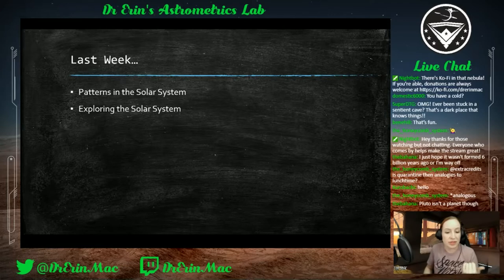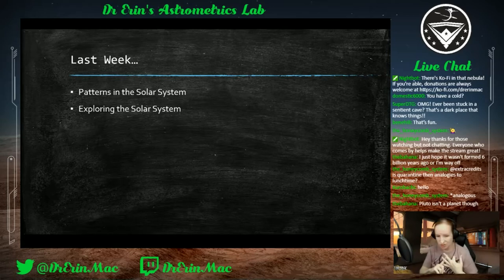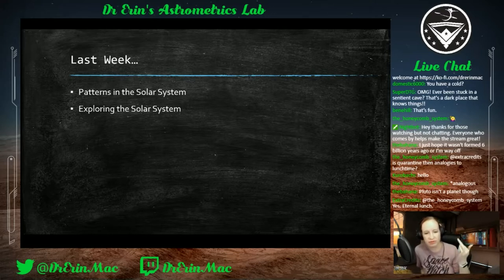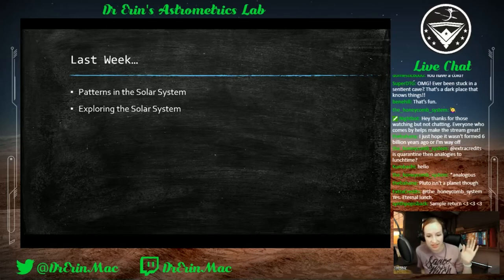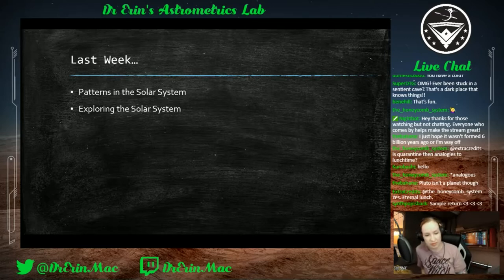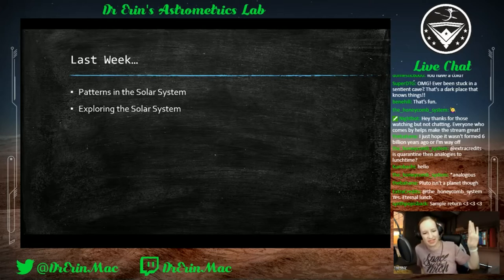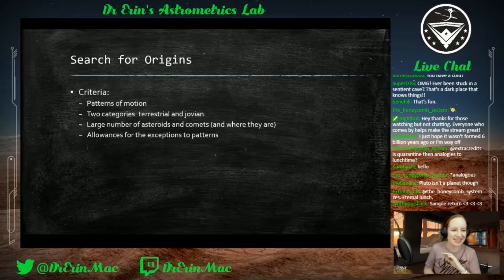We talked about different ways to explore our solar system: flyby missions, orbital missions, landers, rovers, and sample return missions. If you didn't catch it last time, the VODs are available — my toggle was set to subscribers only which I didn't intend, so I apologize. You can also find recordings on my YouTube link below. We had adorable videos and lots of emotions last week — sad robots dying on comets — but we're taking a step back from the emotions this week.